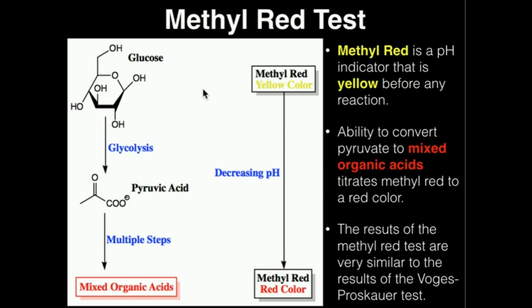Methyl red — we hopefully know by now, we've seen it enough — it is a pH indicator that changes colors when you fluctuate between different pHs.